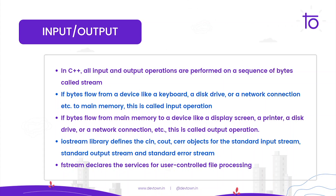In C++, all input and output operations are performed on a sequence of bytes called a stream. If the stream flows from a device like a keyboard, a disk drive, network connection, etc. to the main memory, then this is called an input operation. Similarly, if the bytes flow from main memory to a device such as a display screen, printer, disk drive, etc., then it is called an output operation.